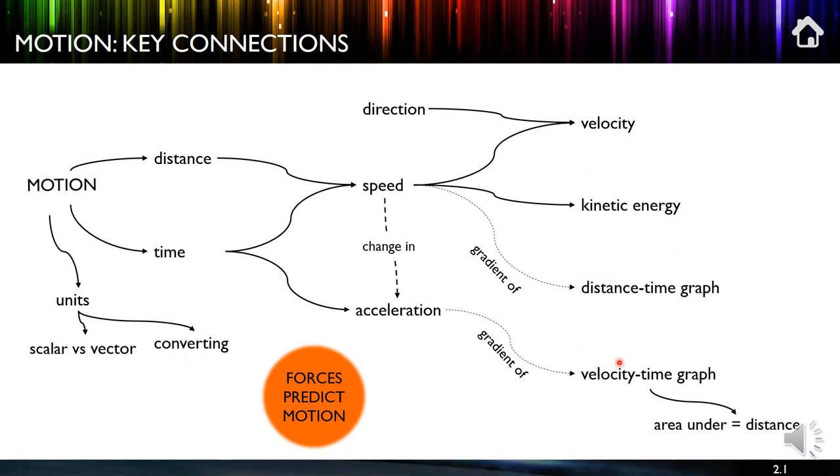Now over here on the other side we've got two key ideas, distance time graph, velocity time graph, and the gradients, so the slopes. So the slope of distance time graph is the speed of the object and the gradient or slope or angle of velocity time graph is the acceleration of the object. We also have the idea of velocity which is subtly different from speed because it includes the idea of direction. And finally the area on the graph equals distance, but coming back to our key idea, always think about this, forces predict motion.